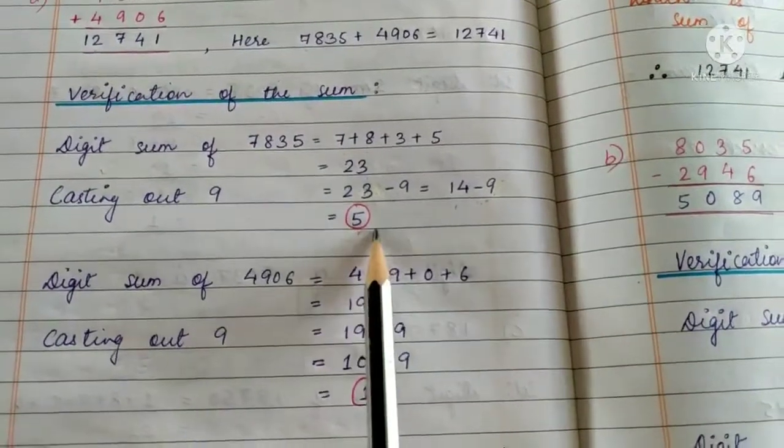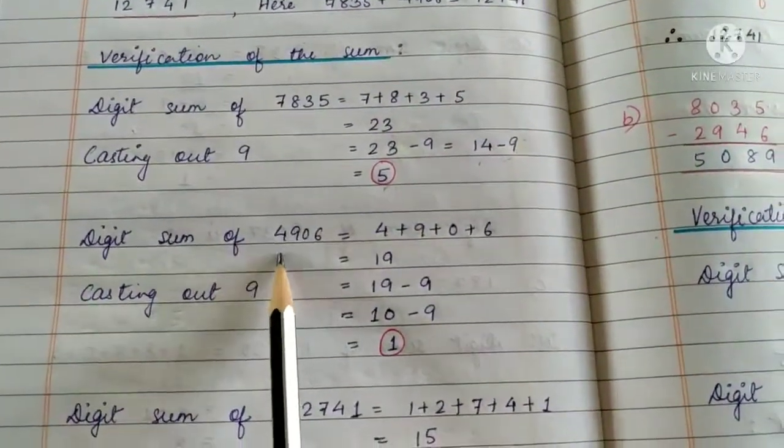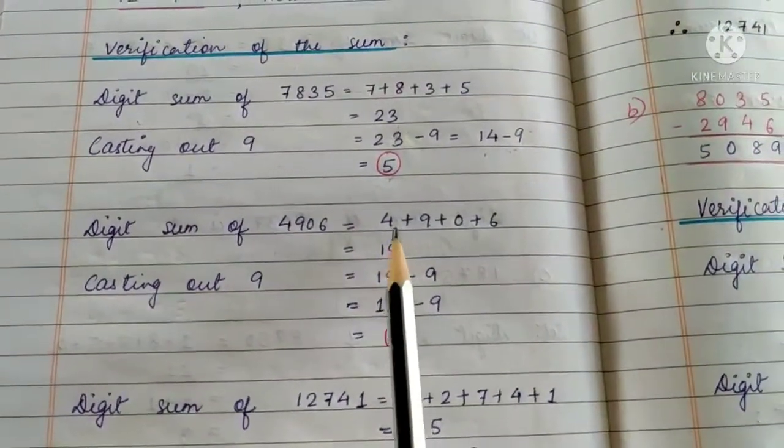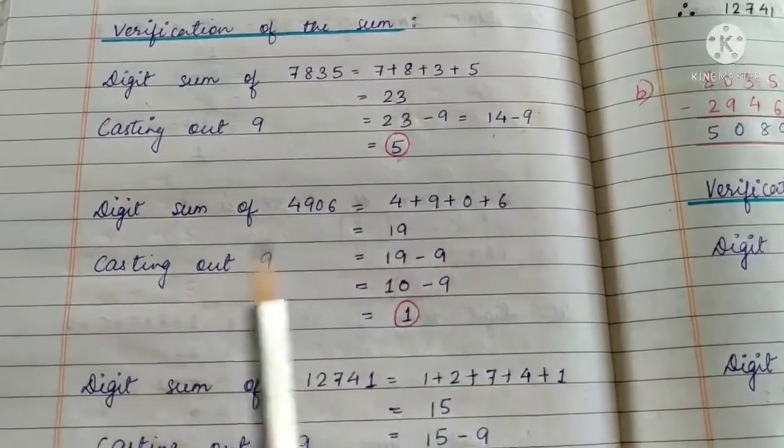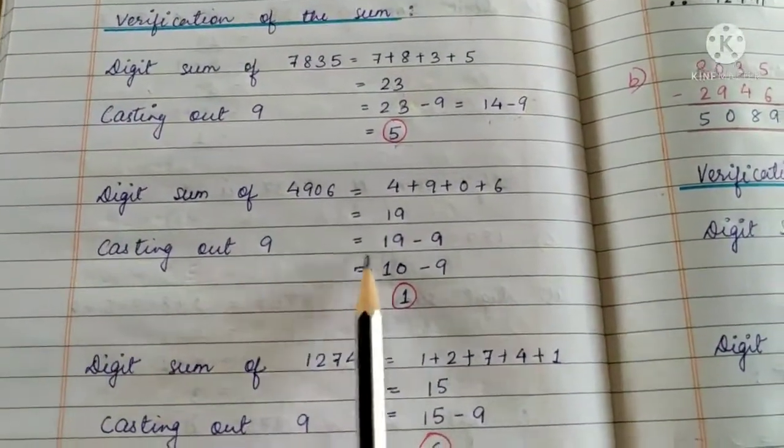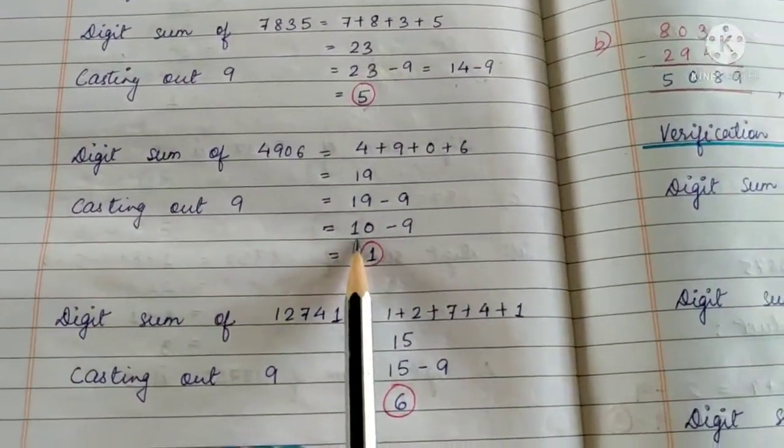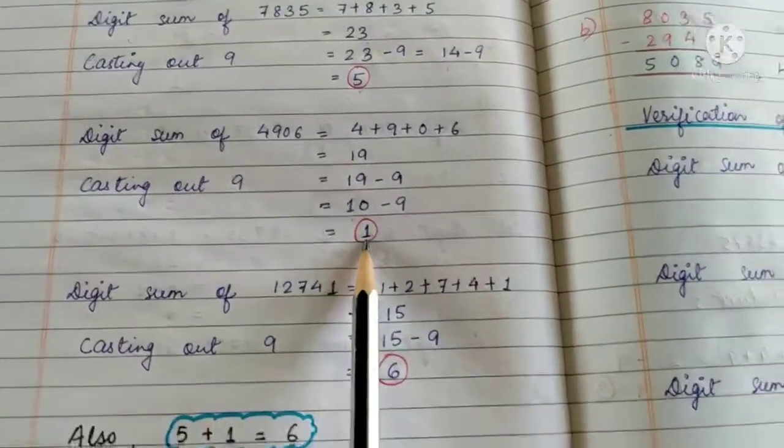The digit sum of the other addend, 4906, is 4 + 9 + 0 + 6 = 19. Now casting out 9, that is subtracting 9 from 19: 19 - 9 = 10. We will not stop here; we will again subtract 9. 10 - 9 = 1.